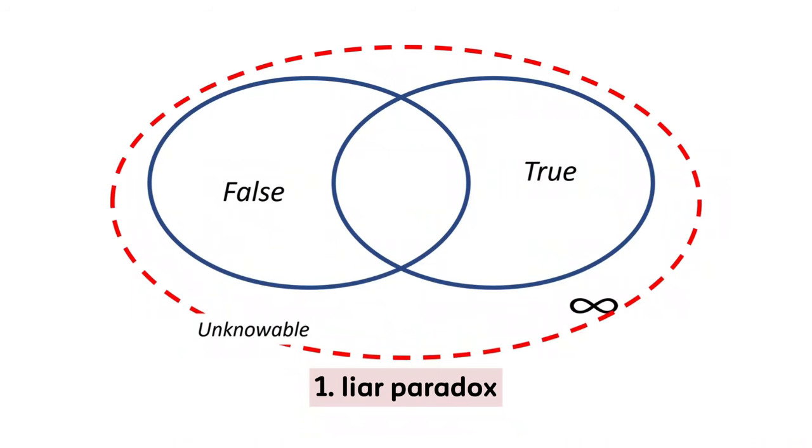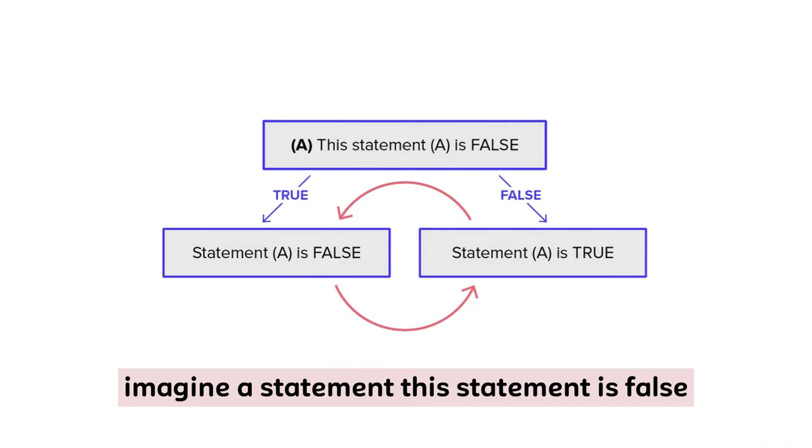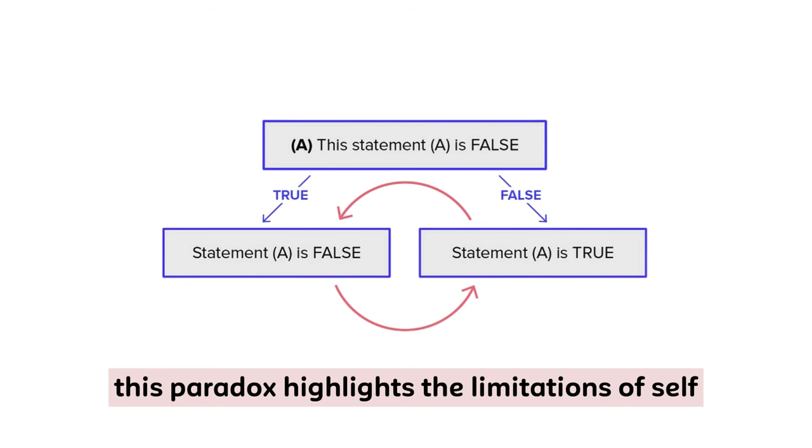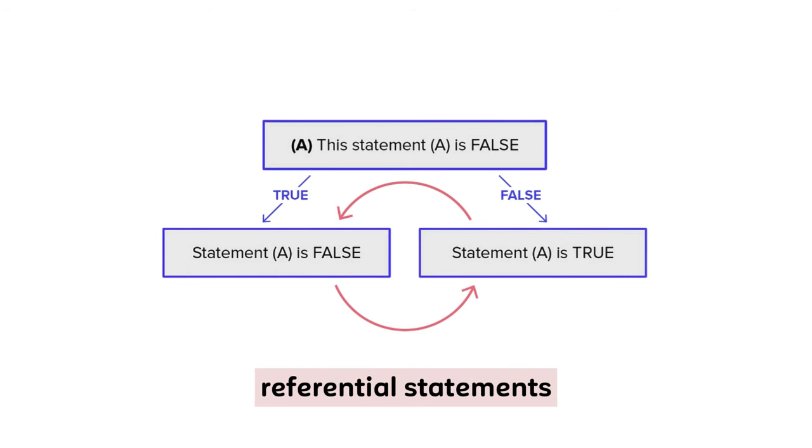1. Liar Paradox. Imagine a statement: this statement is false. If it's true, then it's false. But if it's false, then it must be true. This paradox highlights the limitations of self-referential statements.